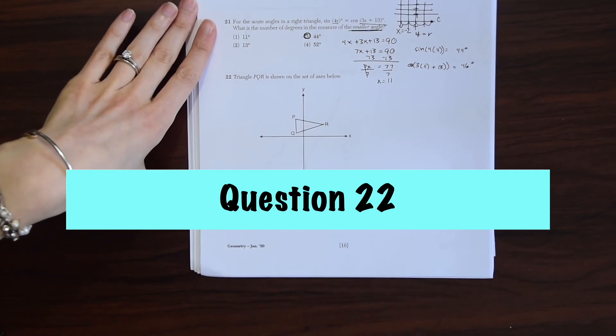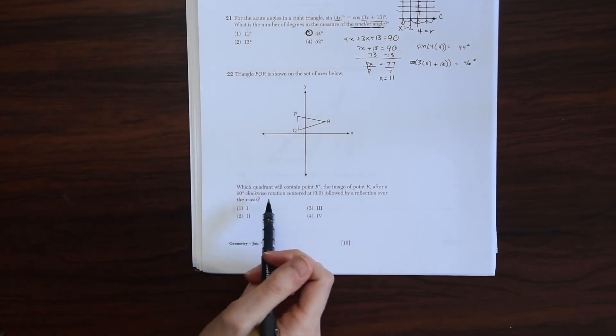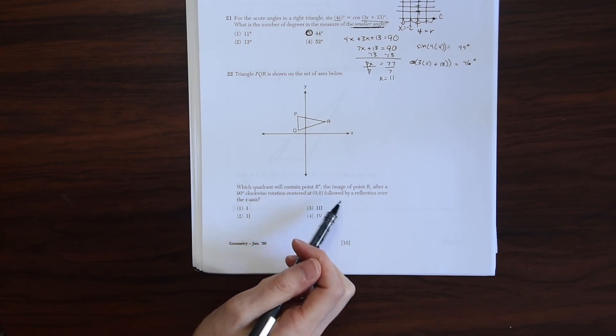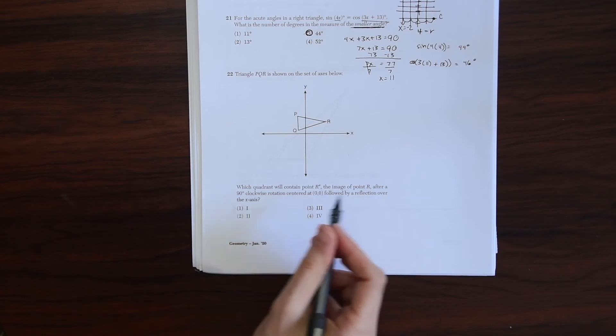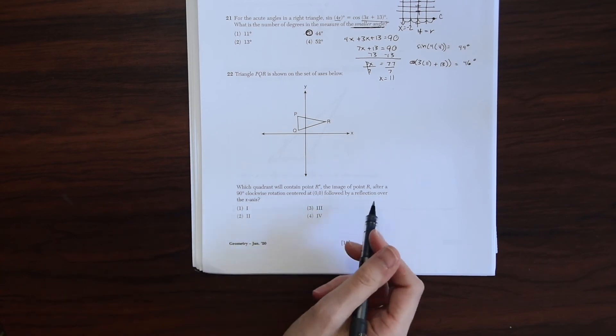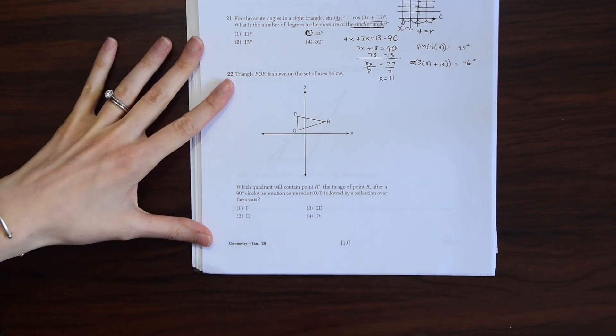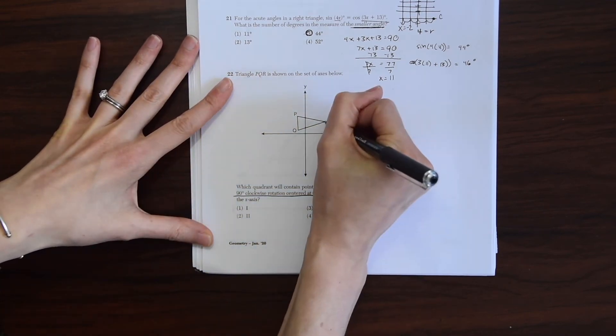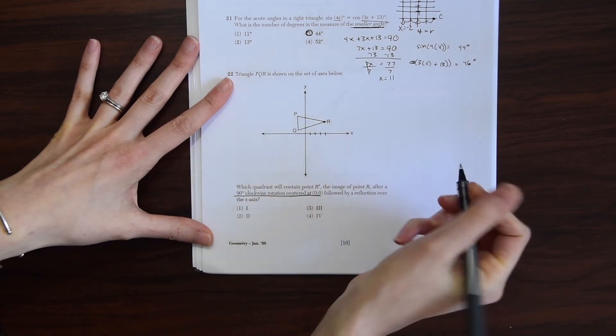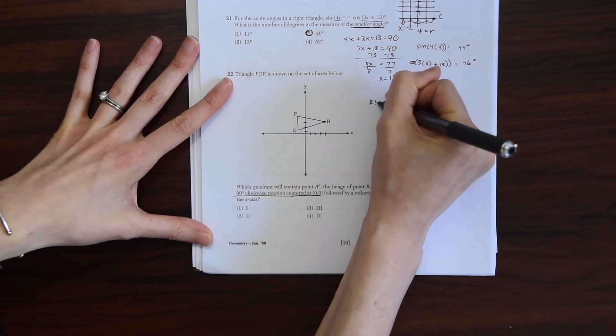For question 22, triangle PQR is shown on the set of axes below. Which quadrant will contain R double prime, the image of point R after a 90 degrees clockwise rotation centered at zero, followed by a reflection over the x-axis? So there's two different transformations we're doing. First we're looking at point R. Let's just make up some values for point R. This looks like it's at 4, 3, right? So R is at 4, 3.